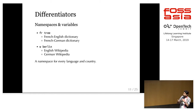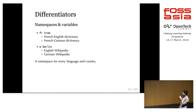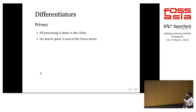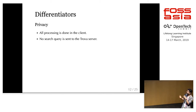As a user, I can subscribe to a namespace and then get the shortcuts for my language and country. There are also namespaces for every individual user. The biggest difference is privacy: Trovo provides full privacy because all the processing is done within the client, so no search query is ever sent to the Trovo server.